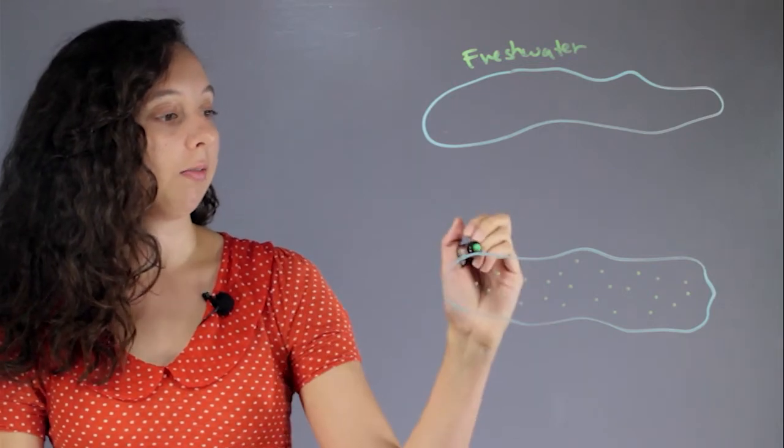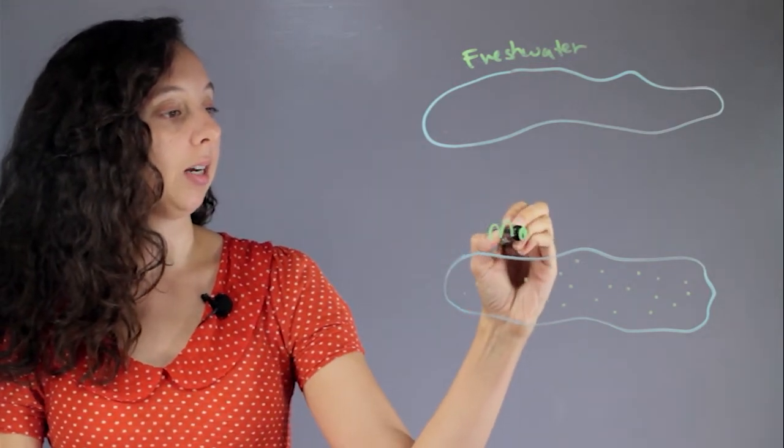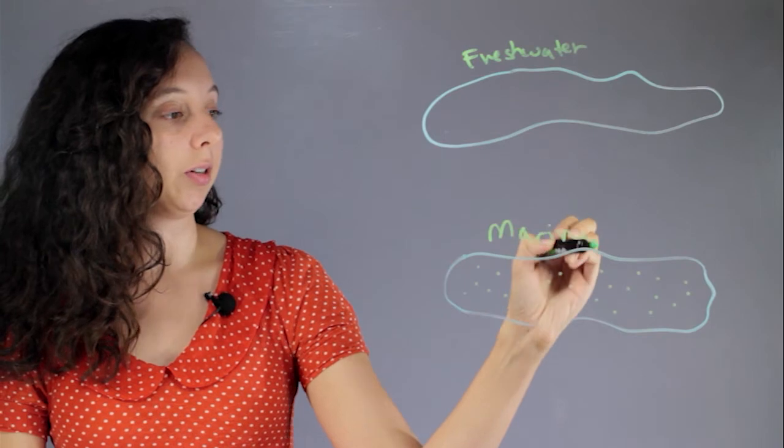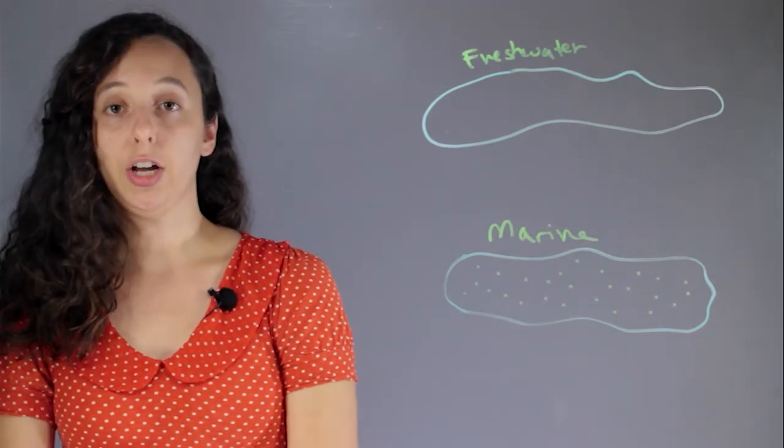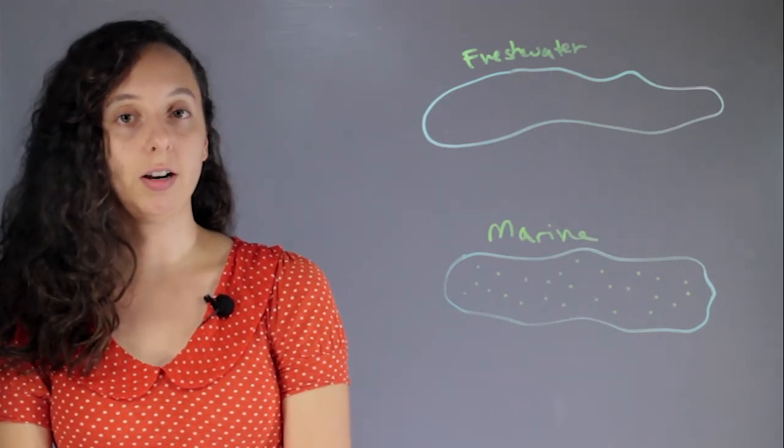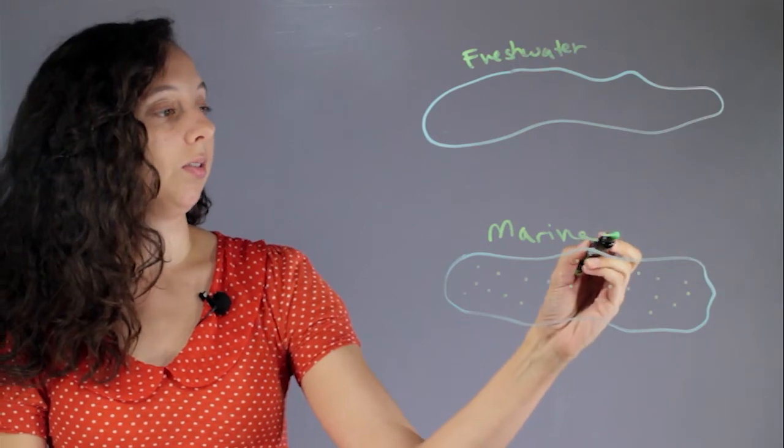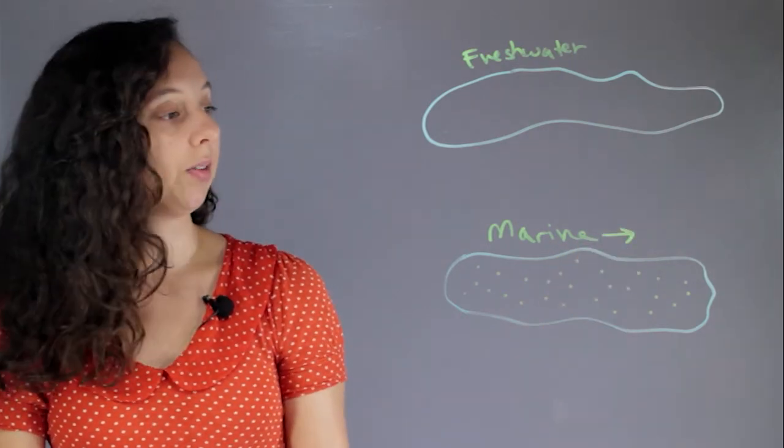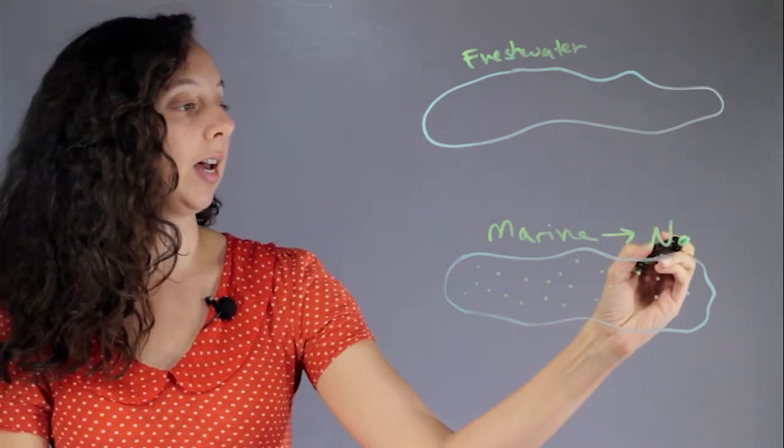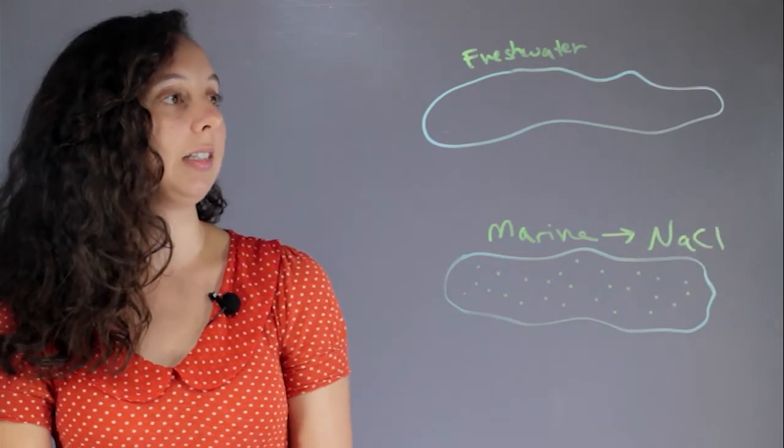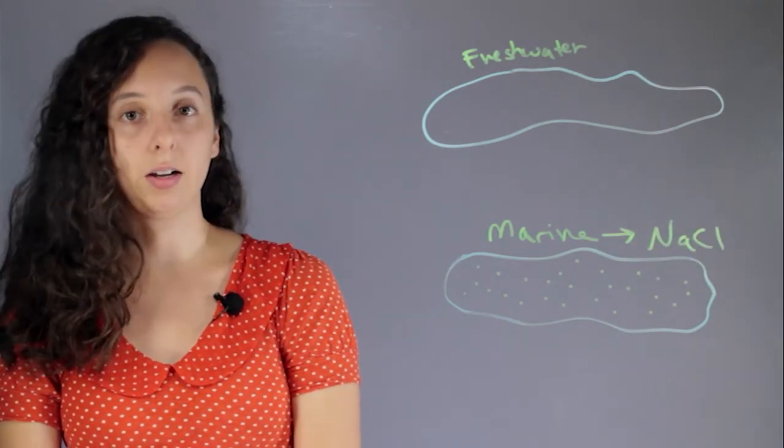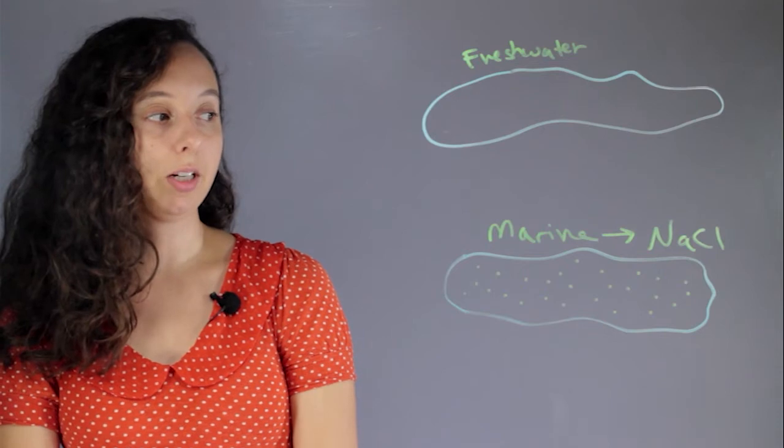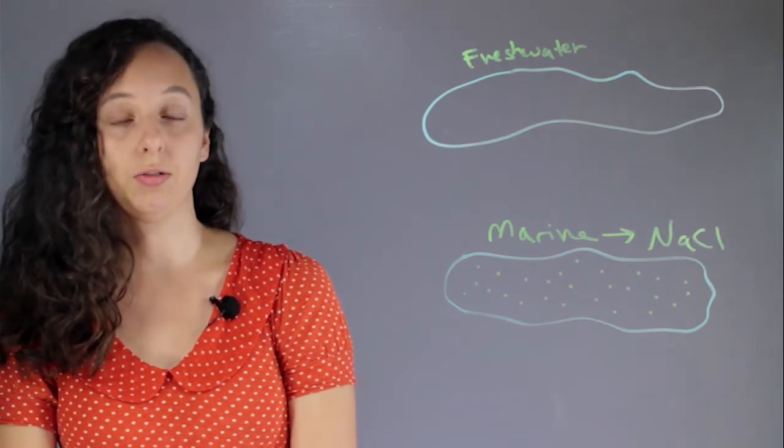And over here, we have marine ecosystems, so basically the ocean. And the big difference here is something that you're all familiar with, salt, sodium chloride. The big difference is that freshwater does not have high concentrations of salt and marine has extremely high concentrations of salt.